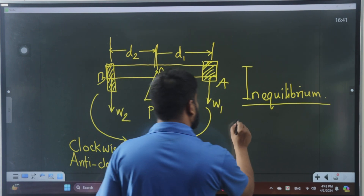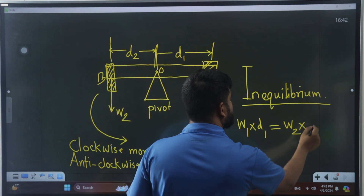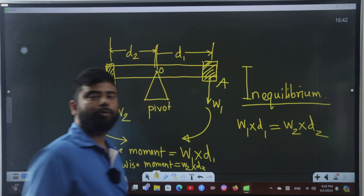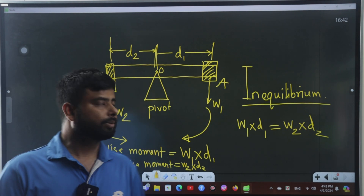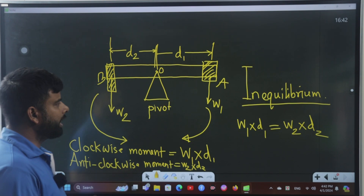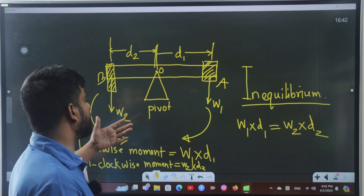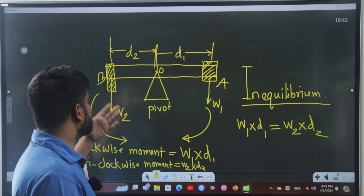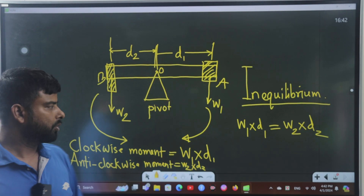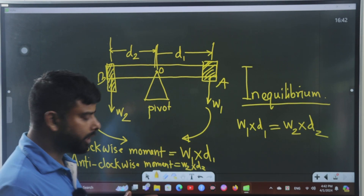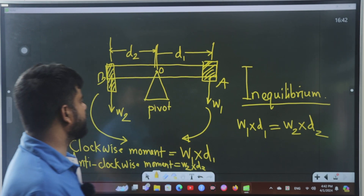In equilibrium, the total clockwise moment w1 × d1 equals the total anti-clockwise moment w2 × d2. This is the principle of moments. Also, in equilibrium, the total downward force equals the total upward force. The sum of clockwise moments equals the sum of anti-clockwise moments.